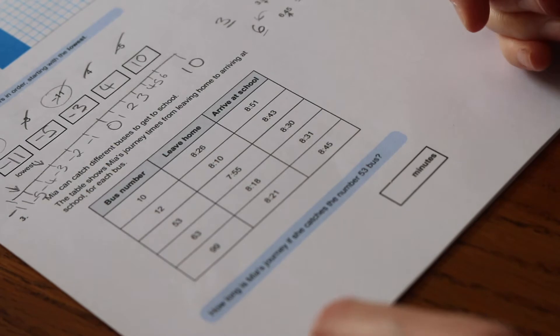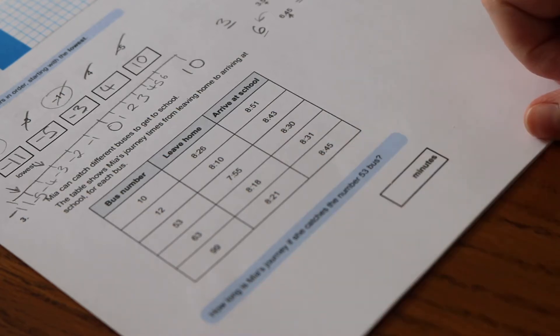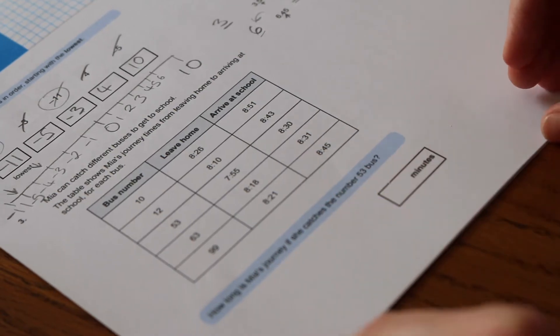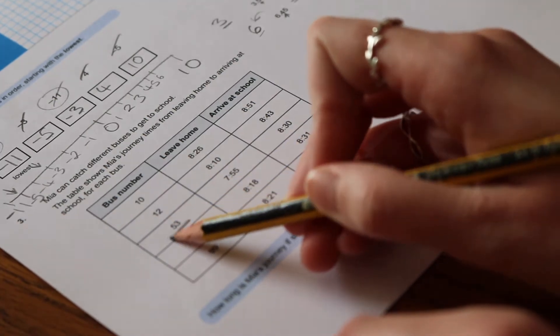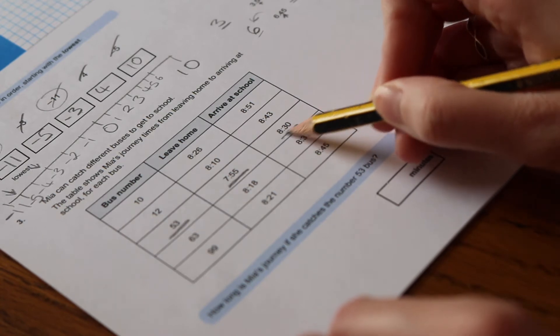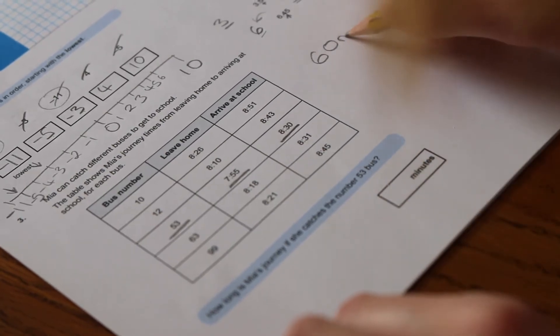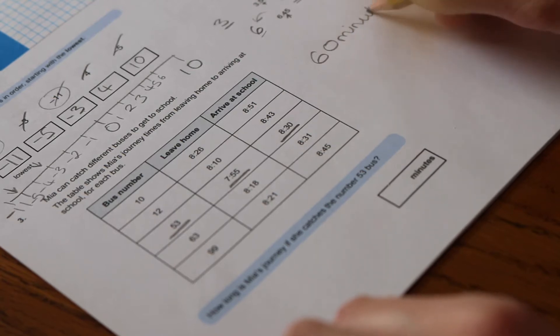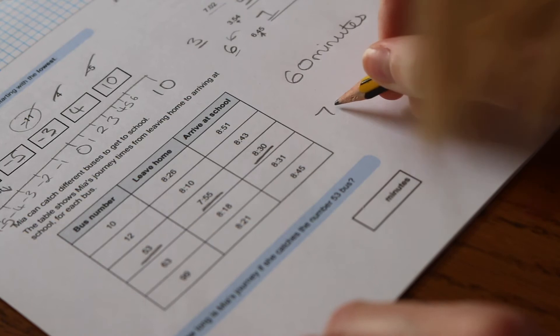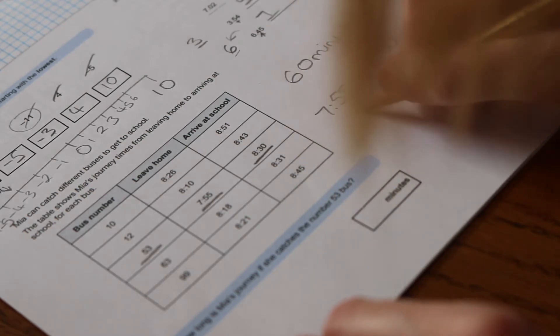Okay, now looking at Mia's journey. So it says Mia can catch different buses to get to school. The table shows Mia's journey times from leaving home to arriving at school for each bus. How long is Mia's journey if she catches the number 53 bus? So we need to look at the number 53 bus, which is this column here. She leaves home at 7:55 and she arrives at school at 8:30. So we know that there are 60 minutes in an hour.